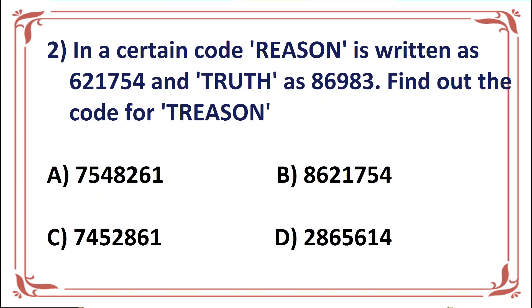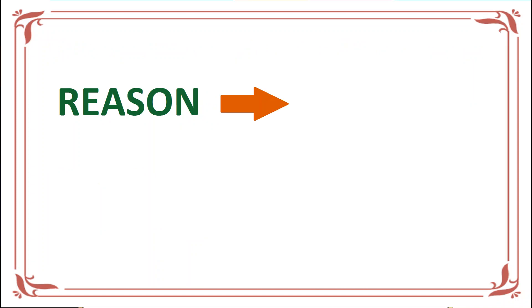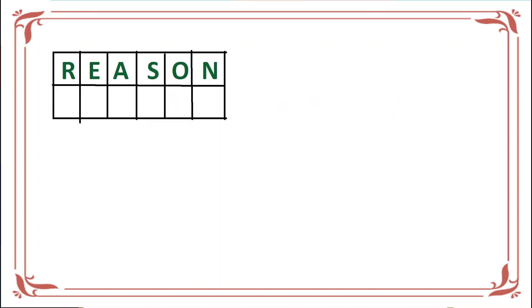Let's solve the second question. In a certain code, REASON is written as 621754 and TRUTH as 869823. Using this, we have to code TREASON.